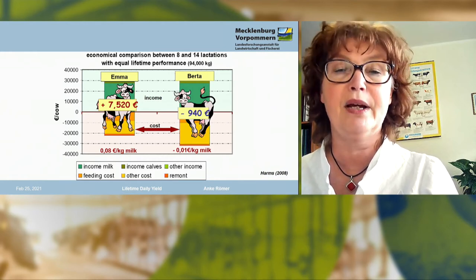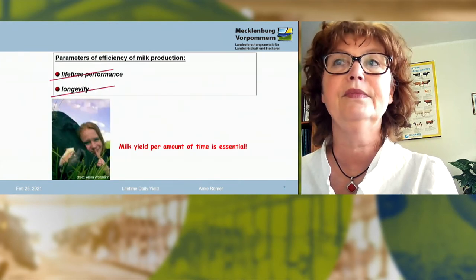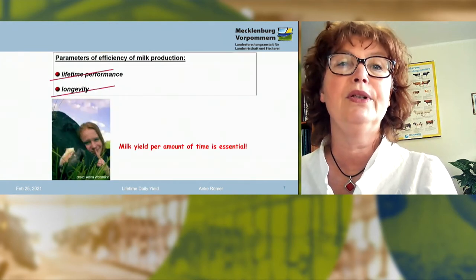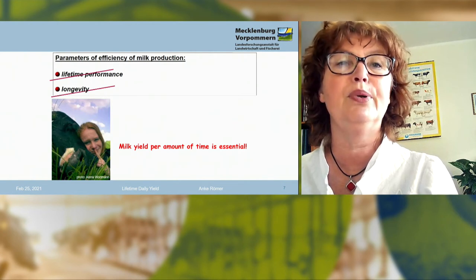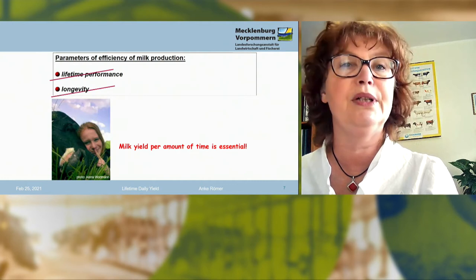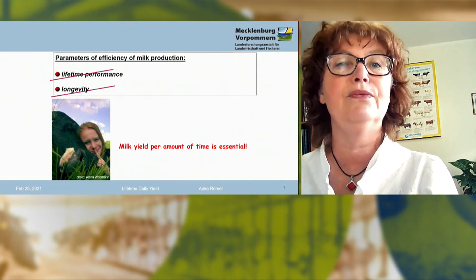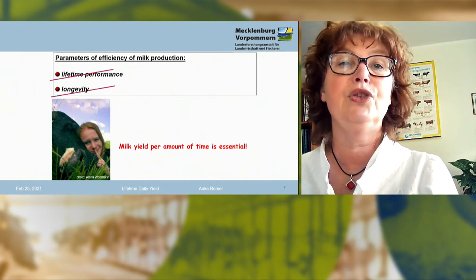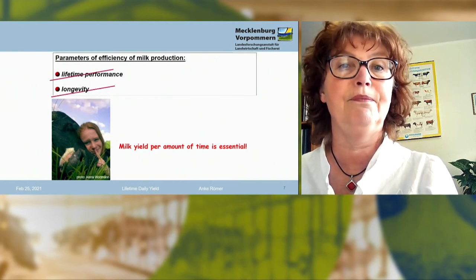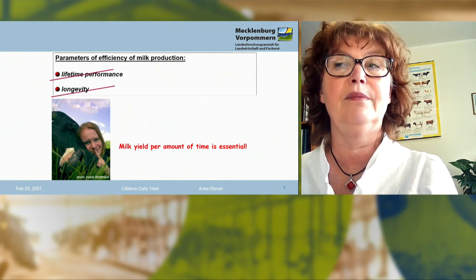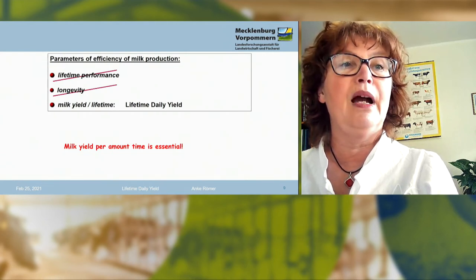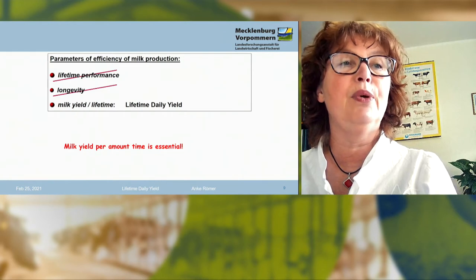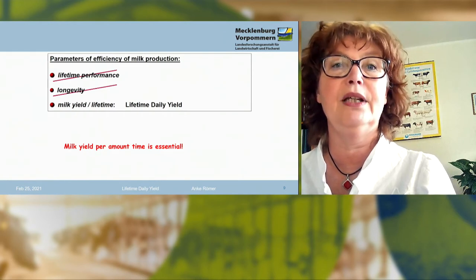So another parameter is necessary. Lifetime performance and lifetime longevity are both not perfect parameters of efficiency of milk yield. Because a cow can live for a long time, but if she has low milk, that is not efficiency. Milk yield per amount of time is essential — milk yield per lifetime, or lifetime daily yield.